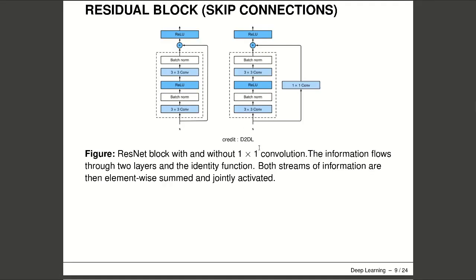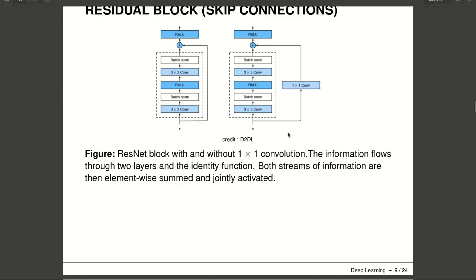Here we can see the detail of the residual block proposed in the paper. There are two different residual blocks. We have the input, which is passed through a 3x3 convolution, then batch normalization, followed by a non-linearity using ReLU activation, then another convolutional layer and another batch normalization. Then we minimize the function f(x) - x. If not changing is the best thing to do, we do so. This type of residual connection can also appear as shown on the right side, where the input is passed through a 1D convolution and then added to the next residual block.